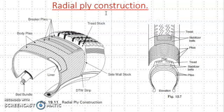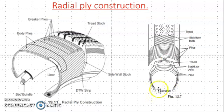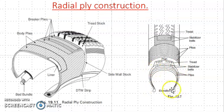Here, the plies are placed one over the other. Here is the bead and all plies meet at the center — one ply over the other. This type of arrangement is called radial ply construction.